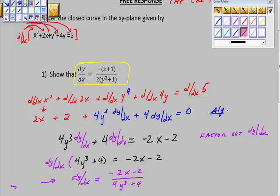I'm going to have to simplify this a little bit because they want to see it in the form that we had it in. So we're going to simplify, and when we simplify this, we're going to take out this, yields to us dy/dx is equal to -2(x + 1). You see I factored out the -2 here over, we can factor out a 4 here. So 4(y³ + 1).